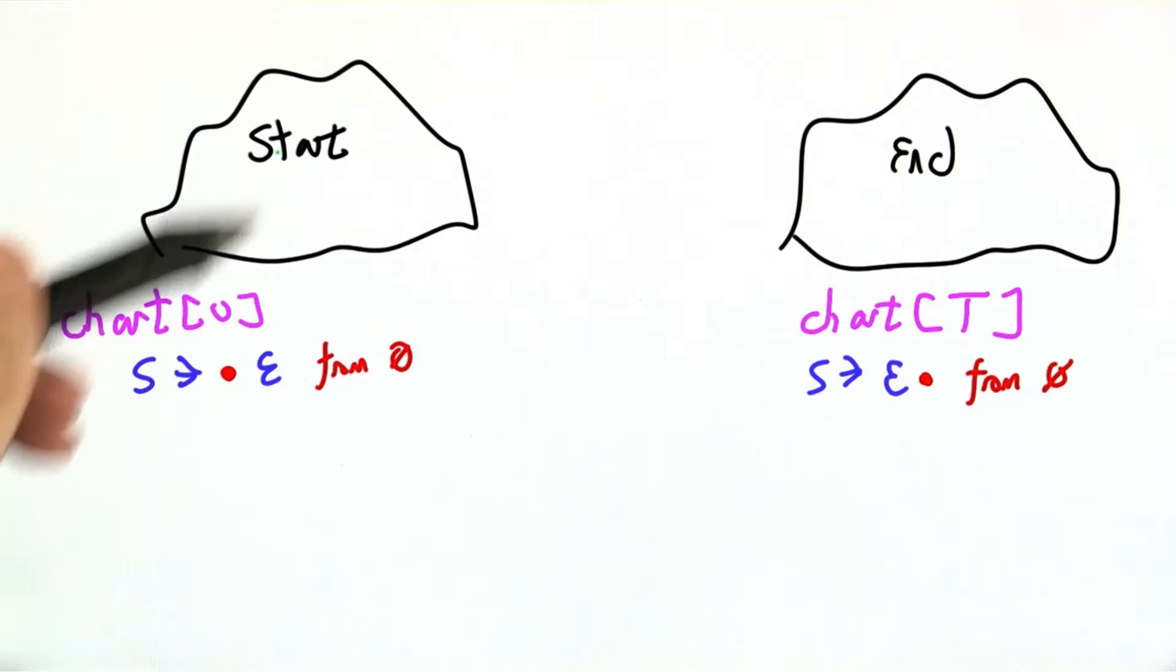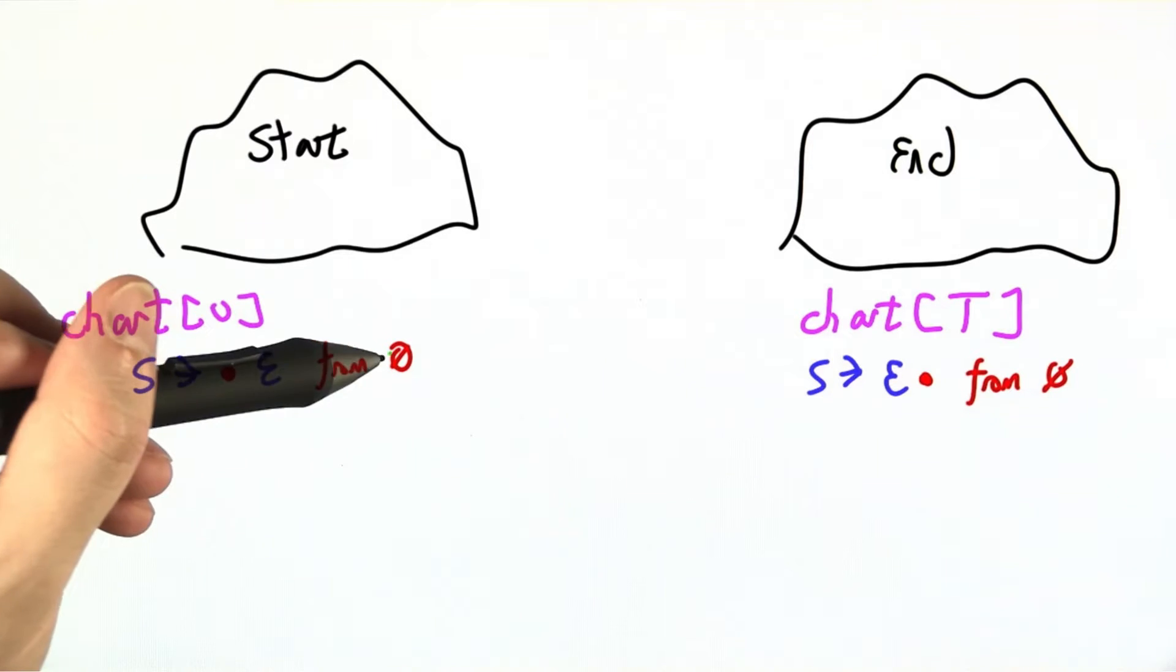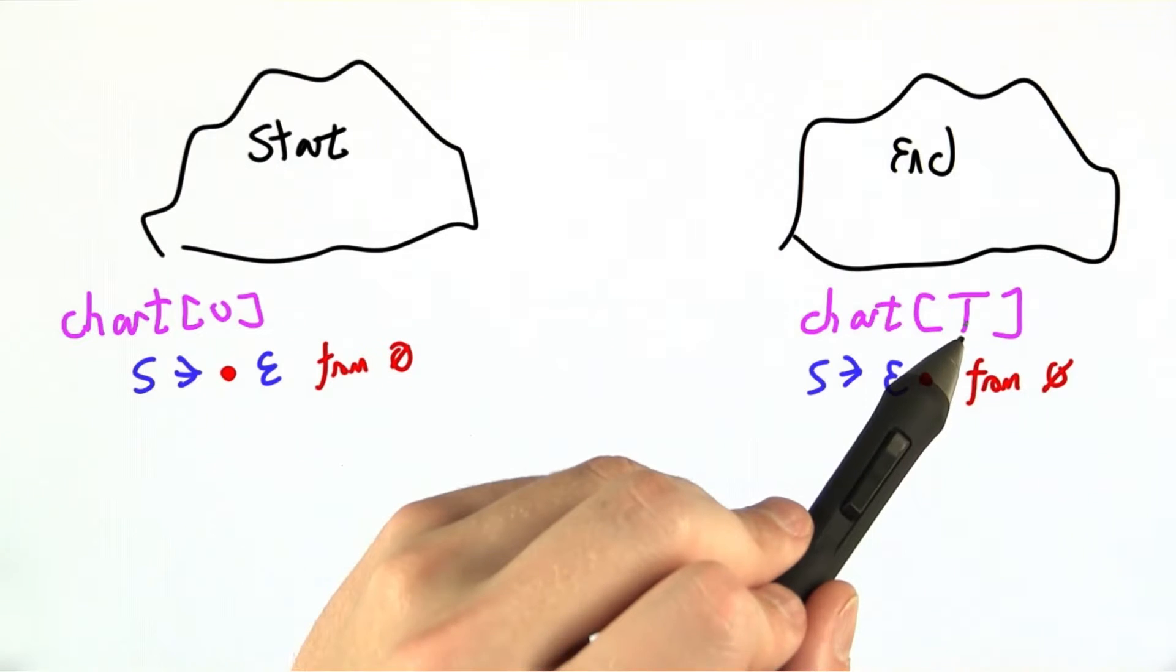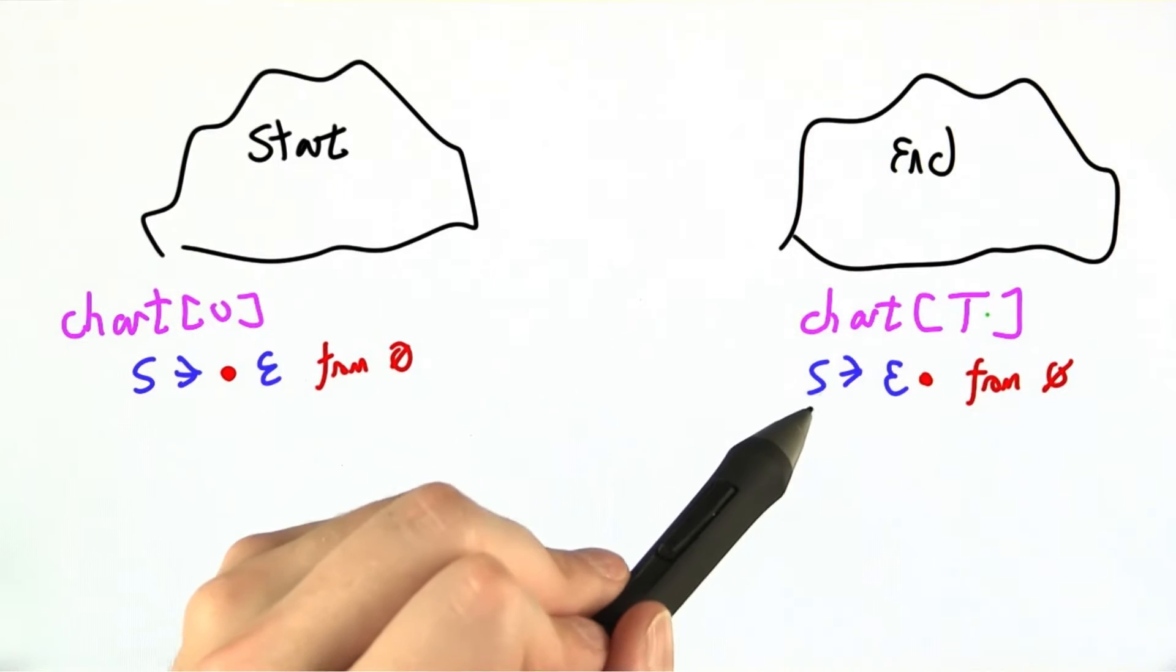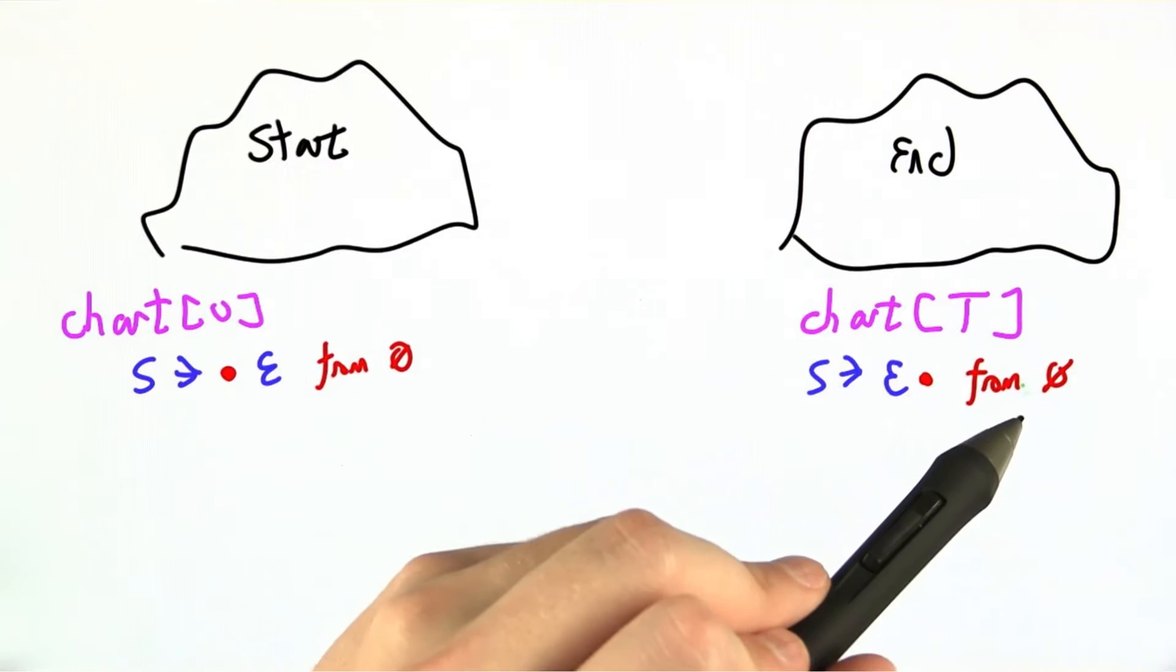We know how our parsing chart starts on the left. Chart 0 starts with S goes to I haven't seen anything yet, but I want an E, and I'm starting from chart position 0. After all T tokens in the input, we've got I have totally seen an E, and I'm done with it now, starting from position 0 in the input.